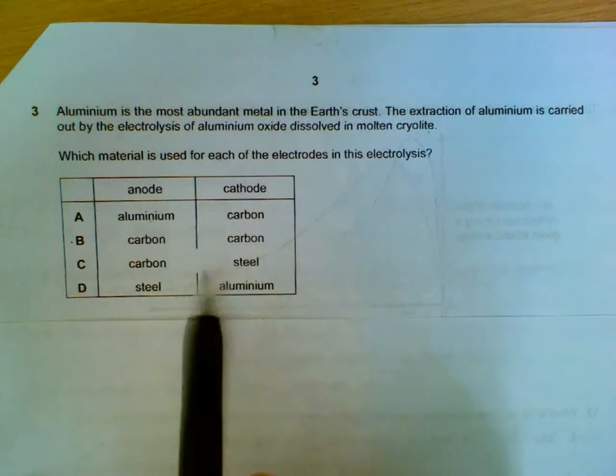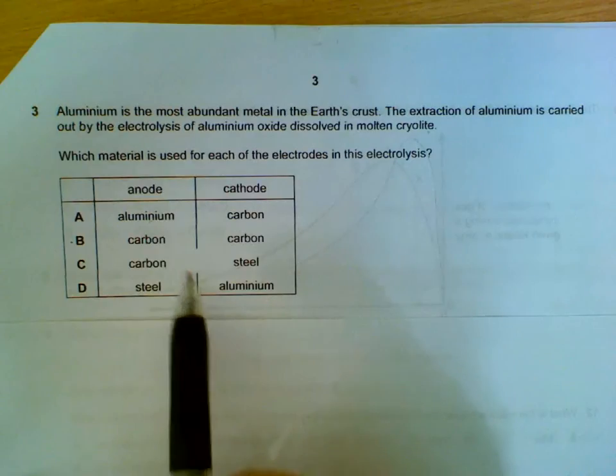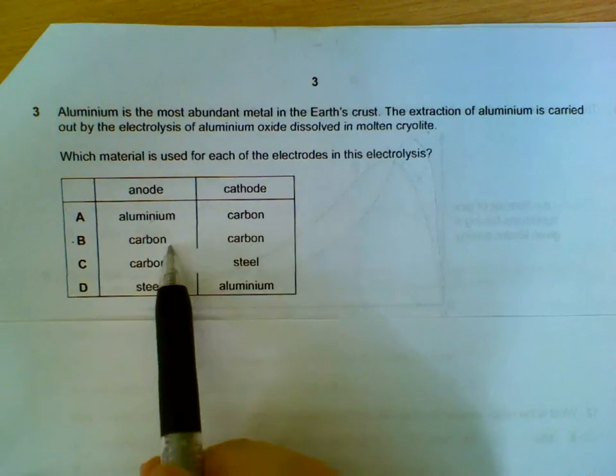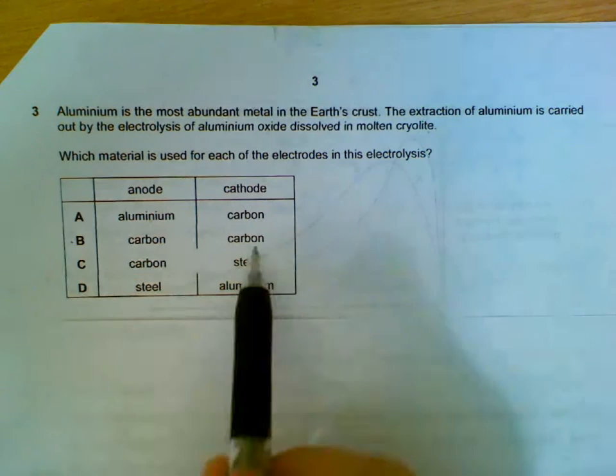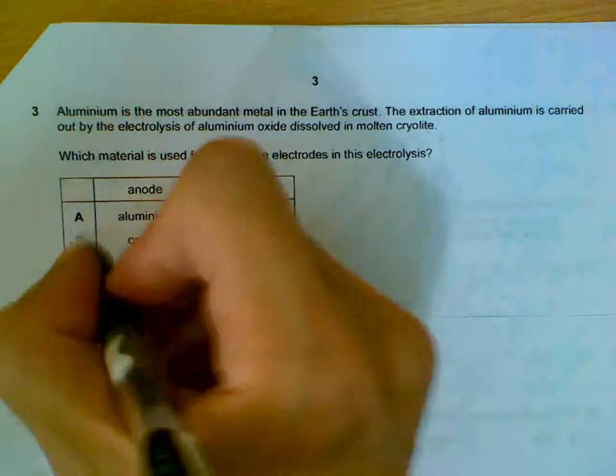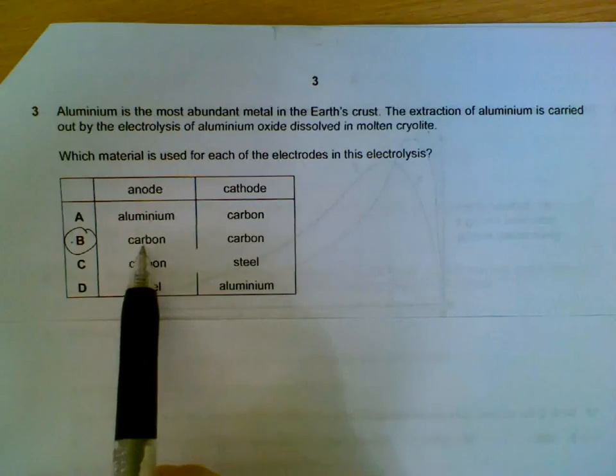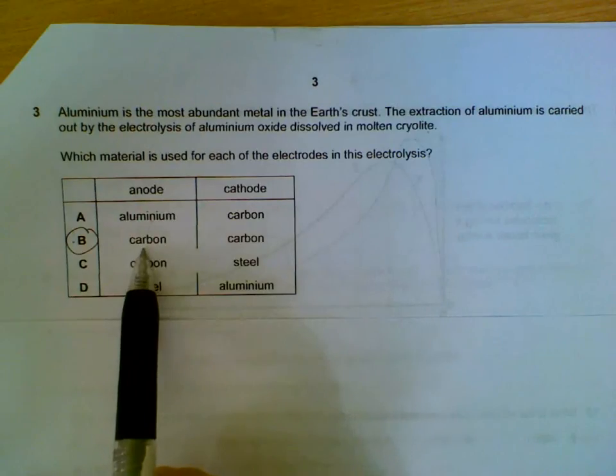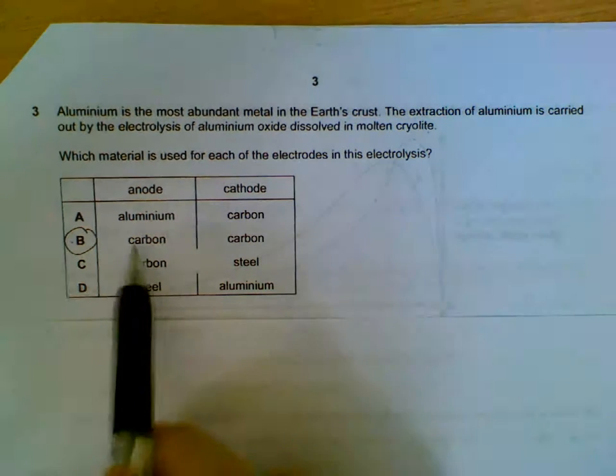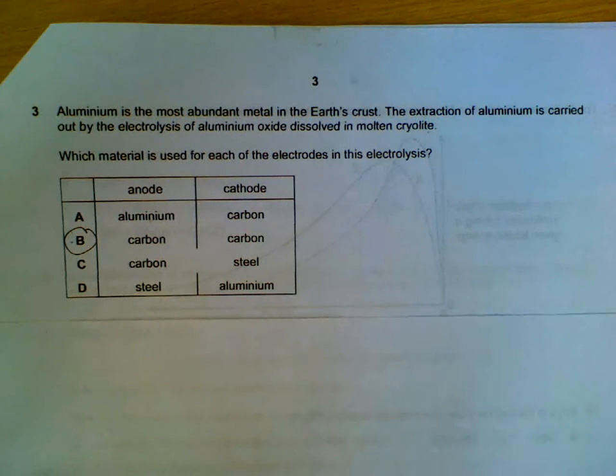Aluminum extraction, it is a recall question. We know that the anode is made of graphite and cathode is also made of graphite. A useful thing to remember is also for some questions that it requires you to know that the oxygen produced at the anode will react with the carbon electrode to form carbon dioxide. But this question, we just need to recall that they are both carbon electrodes.